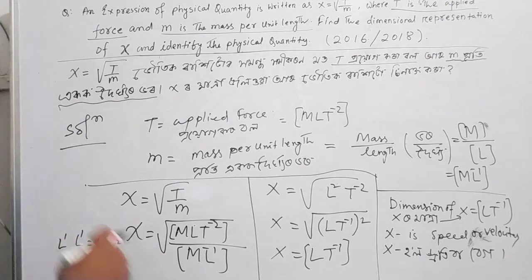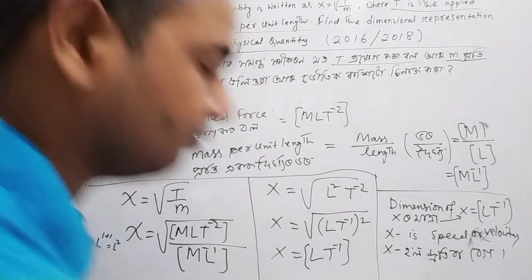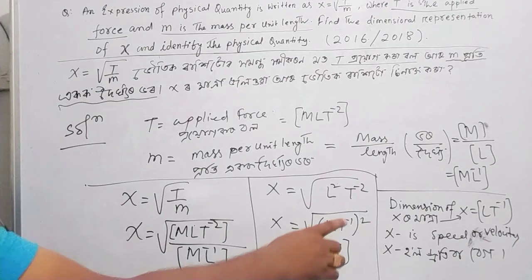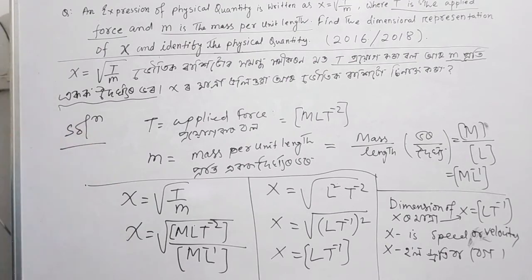So the dimension of X is equal to LT to the power minus 1, and X is speed or velocity.